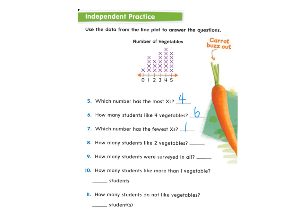How many students like two vegetables? Here's my two on the line plot: one, two, three students. Three students like two vegetables.